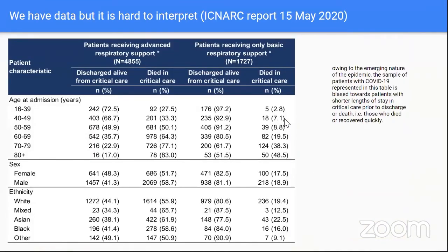This is the ICU data coming out of the UK on the 15th of May. For people who've heard statistics about terrible mortality rates from ventilated patients, it's important to remember that it's the sickest patients who get ventilated, and they'll always do worse than those who don't. In younger patients, the successful discharge rate is very high. But outcomes in older patients are quite poor, and that's worth considering.